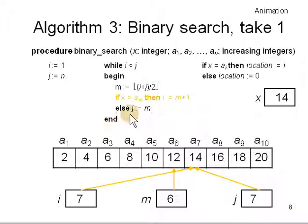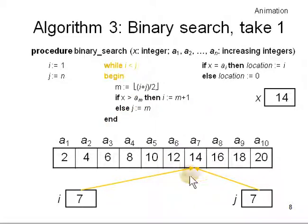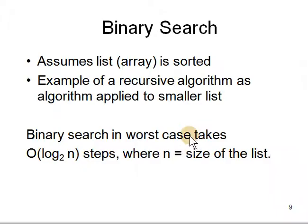And then you come back. Now i is not less than j. Both are pointing to the same thing. So you come out. And if x, 14, is equal to ai, ai is 14. Then look, you found it. Okay. That's the algorithm. They found.